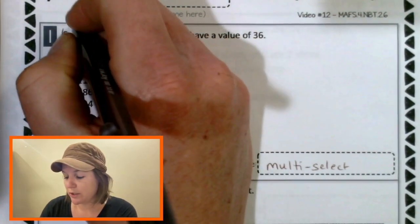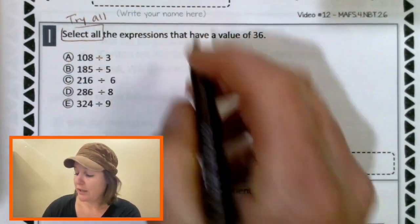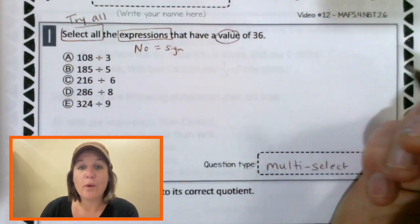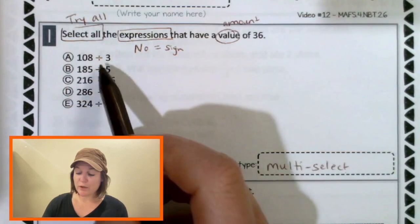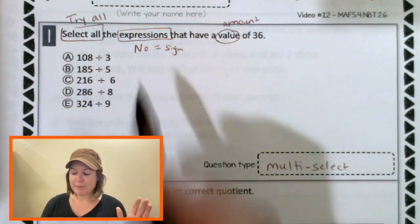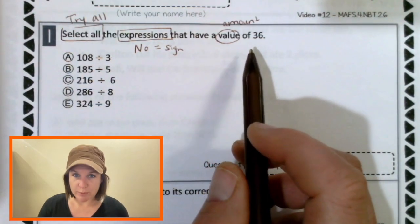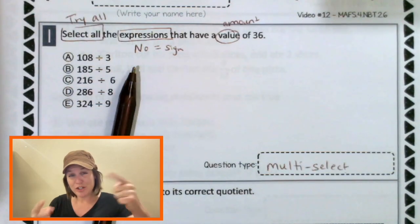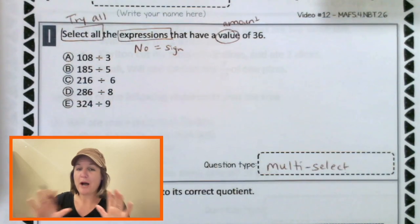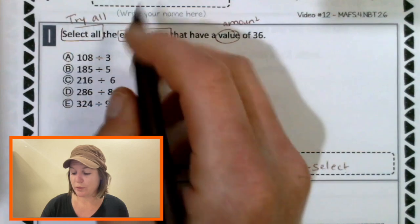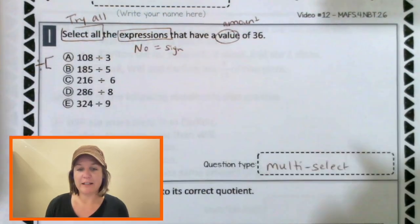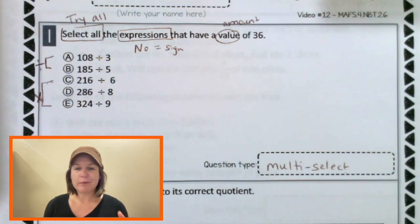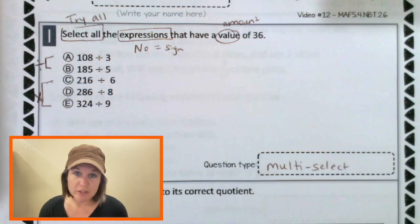Now let's mark up our text to have it make sense. Select all means that we're going to try all, we're going to solve all the expressions. Expressions don't have an equal sign. That have a value or an amount of 36. Which operation do we see happening right here? It's division, right? But because we know the answer, we could also multiply, we could use the inverse operation because multiplication and division are inverse operations. I'll tell you what, I'm going to do the first two, I'm going to divide A and B. And then for C, D and E, I'm going to show you how you can multiply to get the right answer.